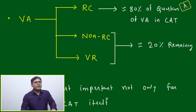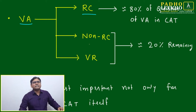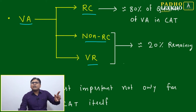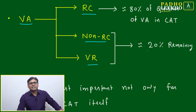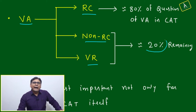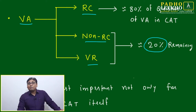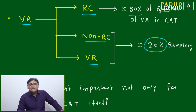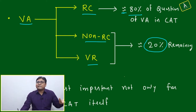Looking at the structure of Verbal Ability: it can be divided into RC, non-RC, and VR. Non-RC and VR combined will be hardly 20% of your VA questions. This is one vital piece of information. Approximately 80% of Verbal Ability questions in CAT will come from Reading Comprehension — with some variation of plus or minus 5%.